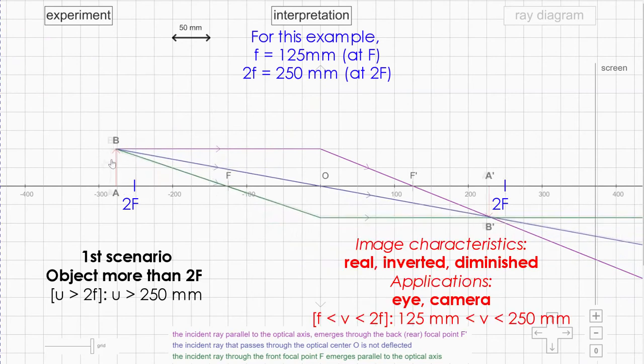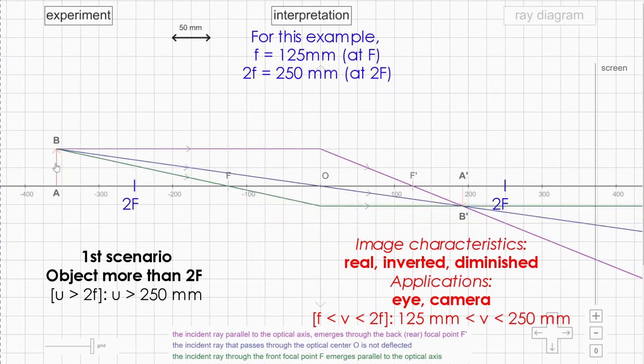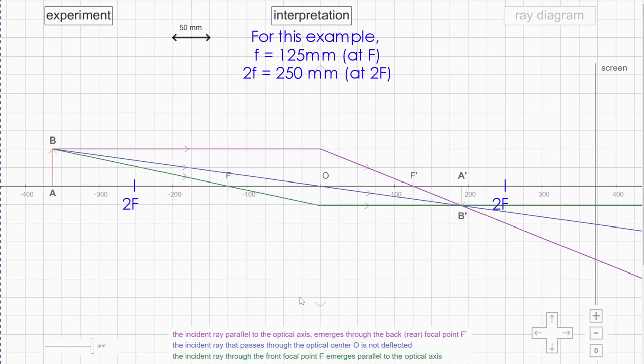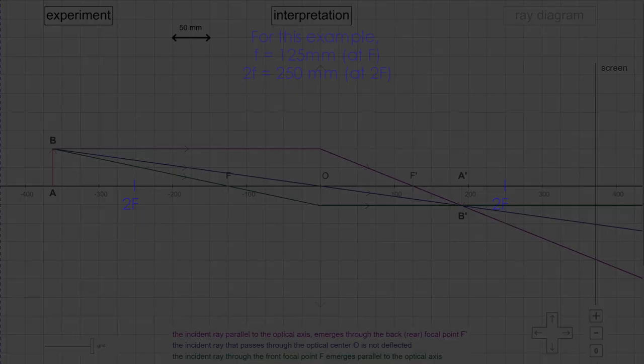And if I shift the object further away from the lens, the image you get will be real, inverted, diminished. So these are the four scenarios that you must know.